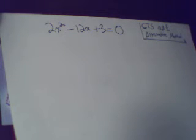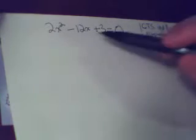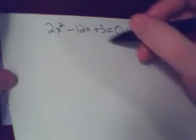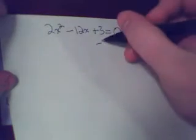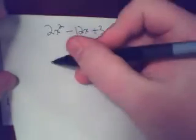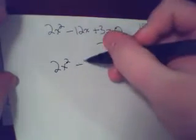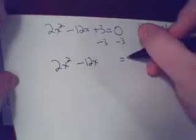This is going to be an alternative method to solve by completing the square when a does not equal 1. So this is the same problem we were doing last time, I'm just going to solve it slightly differently. Step 1 is exactly the same, move the constant term to the other side by subtracting 3. So you get 2x² - 12x = -3.